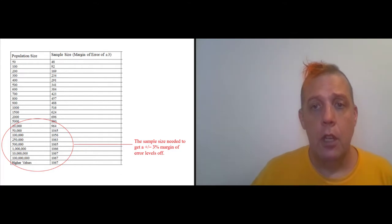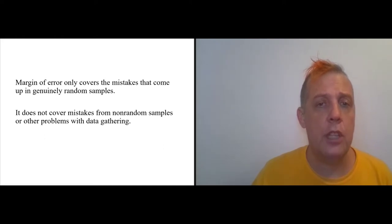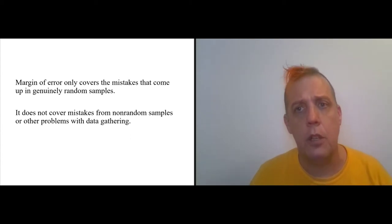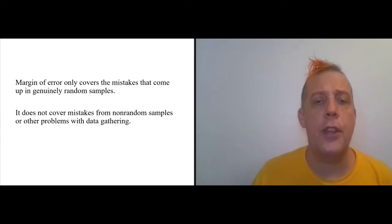Final note: margin of error only covers mistakes that come from genuinely random samples. It does not cover mistakes that come from non-random samples or other problems in data gathering. Although the margin of error is included in every survey you ever see publicized on a good news site, that is not the only source of error. In fact, it's not even the most common source of error. It is the source of error that we are able to quantify and deal with the best, and that's why we can give it this number plus or minus 3%. But that's just errors that come from the process of random sampling itself and not errors that might come up because your sample wasn't really random to begin with, or maybe your question was worded badly or that sort of thing.